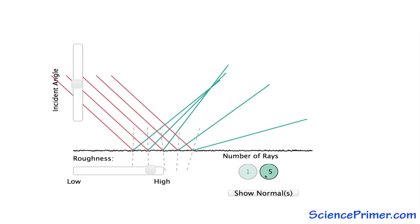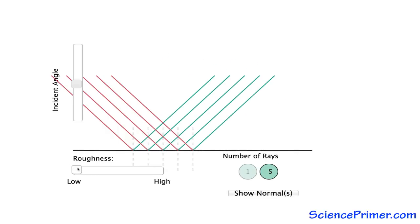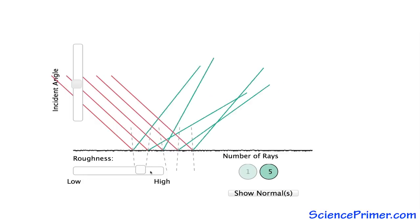The orientation of the normal lines at neighboring points along a surface differentiates specular from diffuse reflection. If the normal lines are parallel, reflection will be specular. If they are not parallel, reflection will be diffuse.